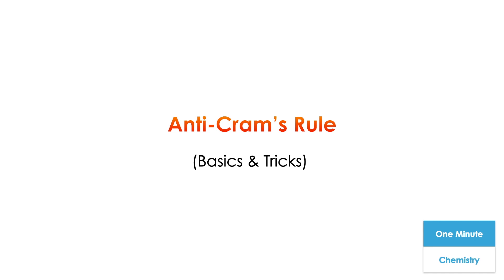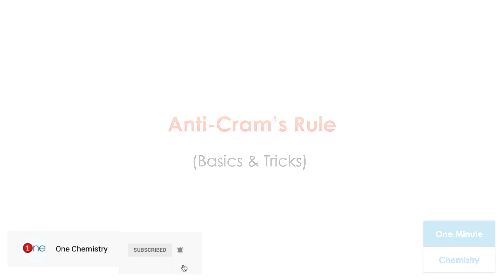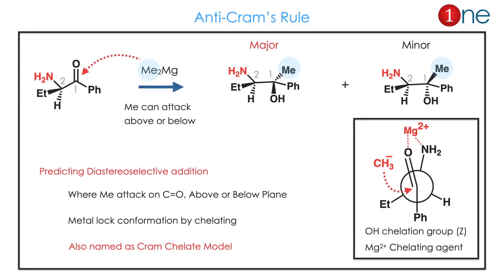Welcome to One Chemistry, this is the One Minute Chemistry series. We are going to quickly see what is Anti-Cram's rule. As the name suggests, it is the opposite of Cram's rule. Basically, you are predicting the diastereoselective addition — you are converting an aldehyde into an alcohol, predicting where the methyl group attacks.